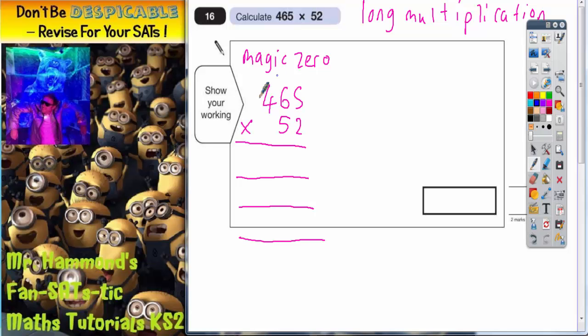First line we're going to do the 465 multiplied by this 2. So we're going to do 2 lots of 5, 2 lots of 6, 2 lots of 4 in that order. So 2 5s are 10, put your 0 in, carry your 1 to the next column.